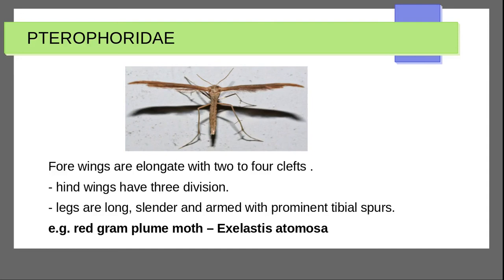Next family is Pterophoridae. Forewings are elongated with two or four clefts; hindwings have three divisions. Legs are long, slender, and armed with prominent tibial spurs. Example: red gram plume moth — Exelastis atomosa.